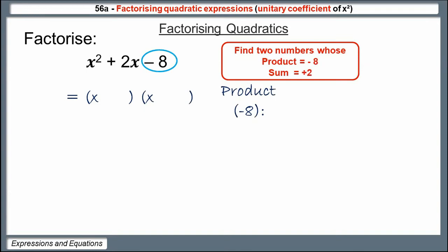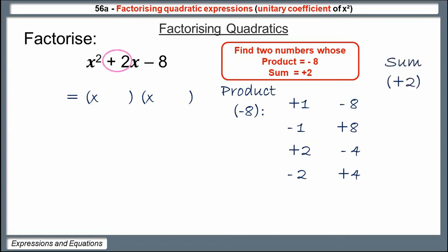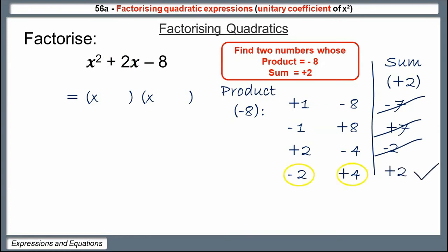Because we're trying to make a negative number, the two numbers we multiply together must have different signs, but we don't know which way round. So to make minus 8: plus 1 and minus 8, and also minus 1 and plus 8. Next pair: plus 2 and minus 4, and also minus 2 and plus 4. Checking sums: plus 1 and minus 8 make minus 7 — no. Minus 1 and plus 8 make plus 7 — no. Plus 2 and minus 4 make minus 2 — close but not quite. Minus 2 and plus 4 make plus 2 — that's the one. So our brackets are x minus 2 and x plus 4.